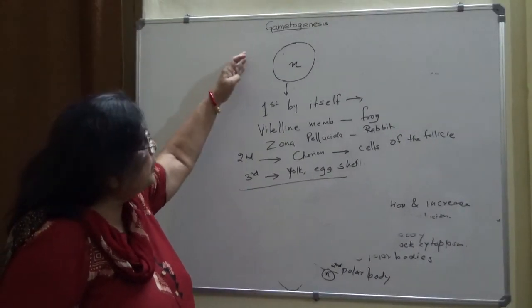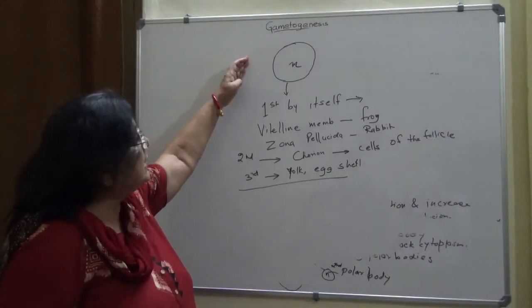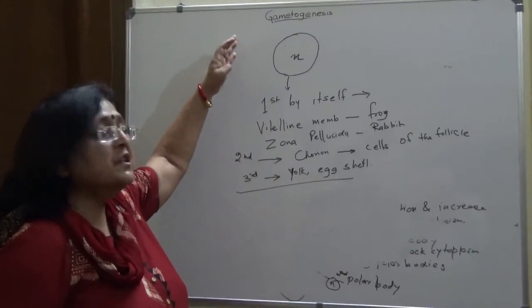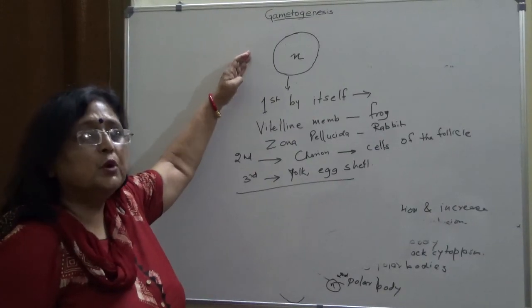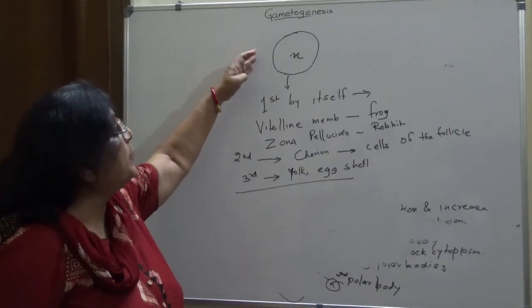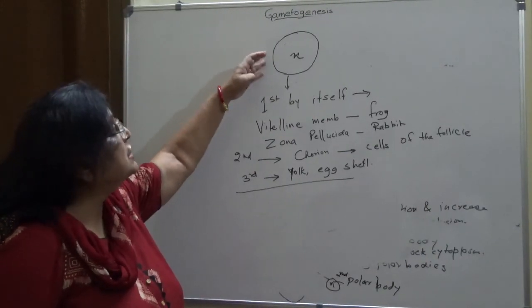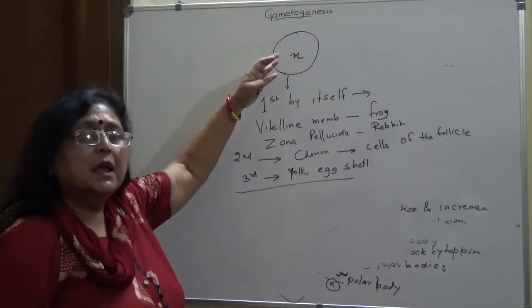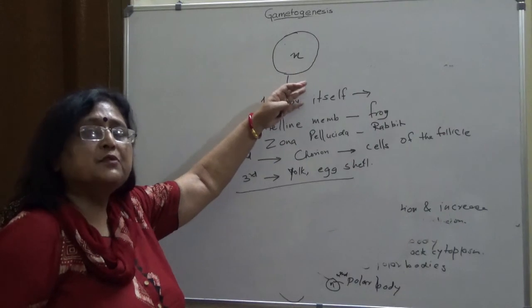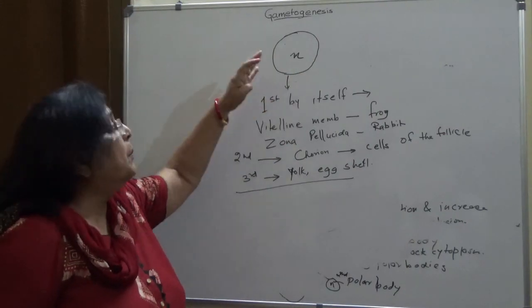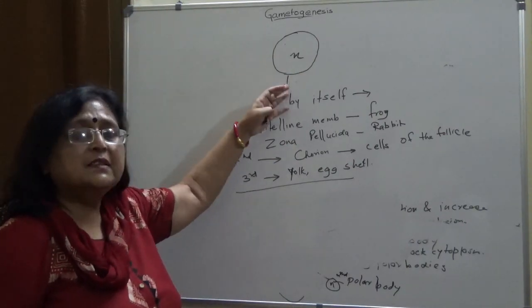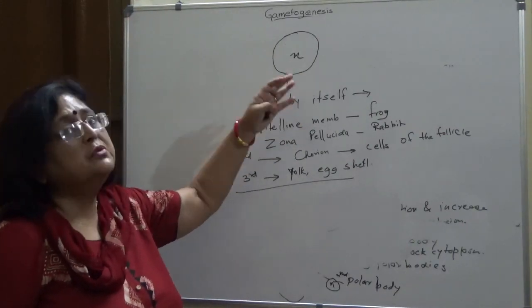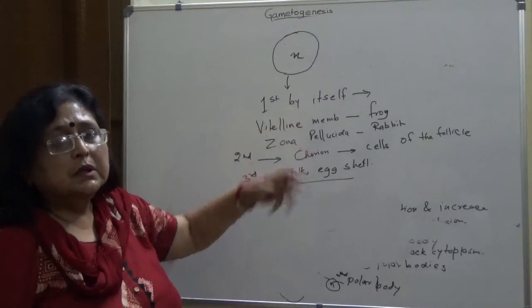So we have seen how a sperm and ovum are produced from the primary germ cells. In the next class we will see how these two fertilize to form a zygote. Thank you.